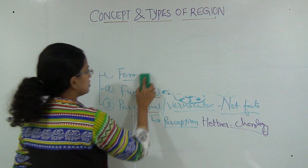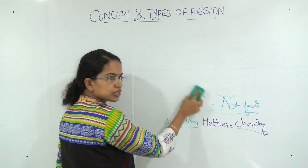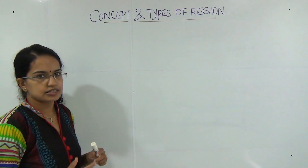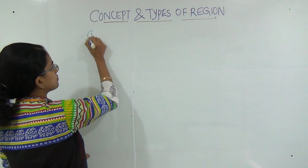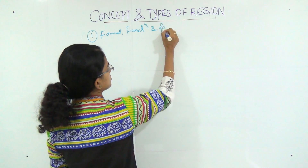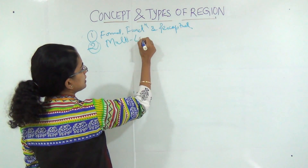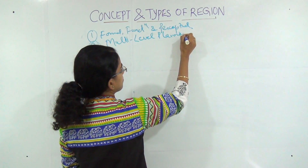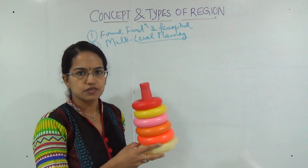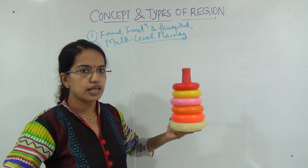The next classification is based on multi-level planning. What we mean by multi-level planning is this approach is mainly used in the concept of regional development, where we talk about development of regions in layers or in steps. We can understand multi-level demarcation of regions by a simple example: I have a set of rings. We can define the region based on size or the area it is covering. You have the biggest ring at the bottom — that is the biggest area, called the macro-macro region.